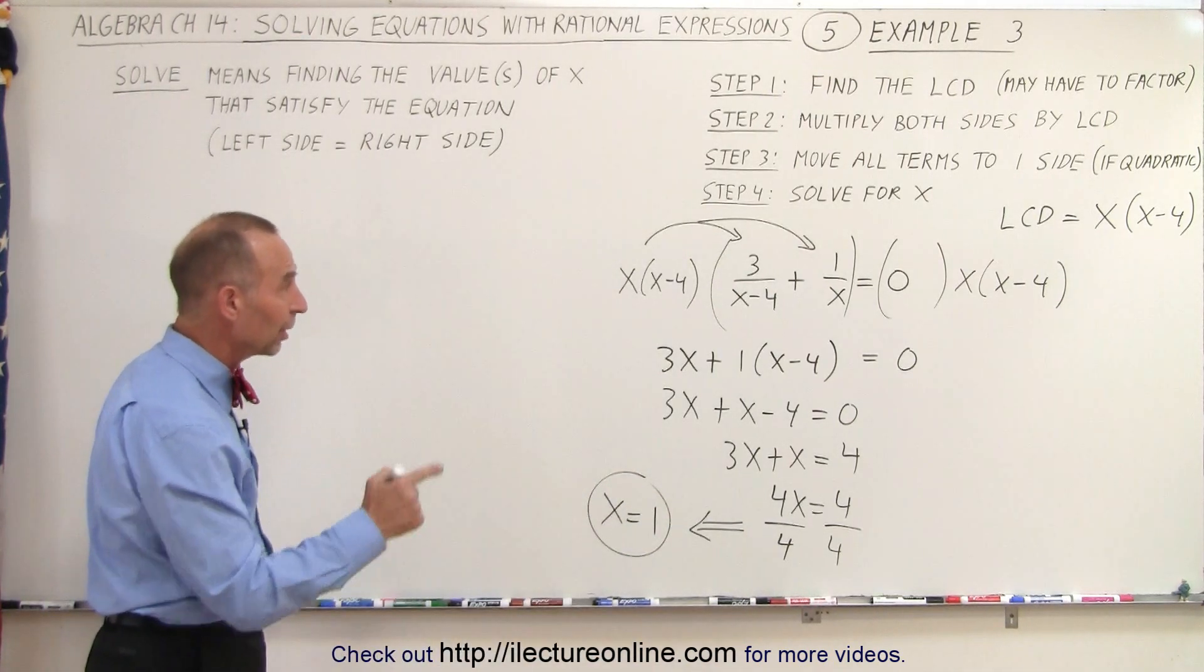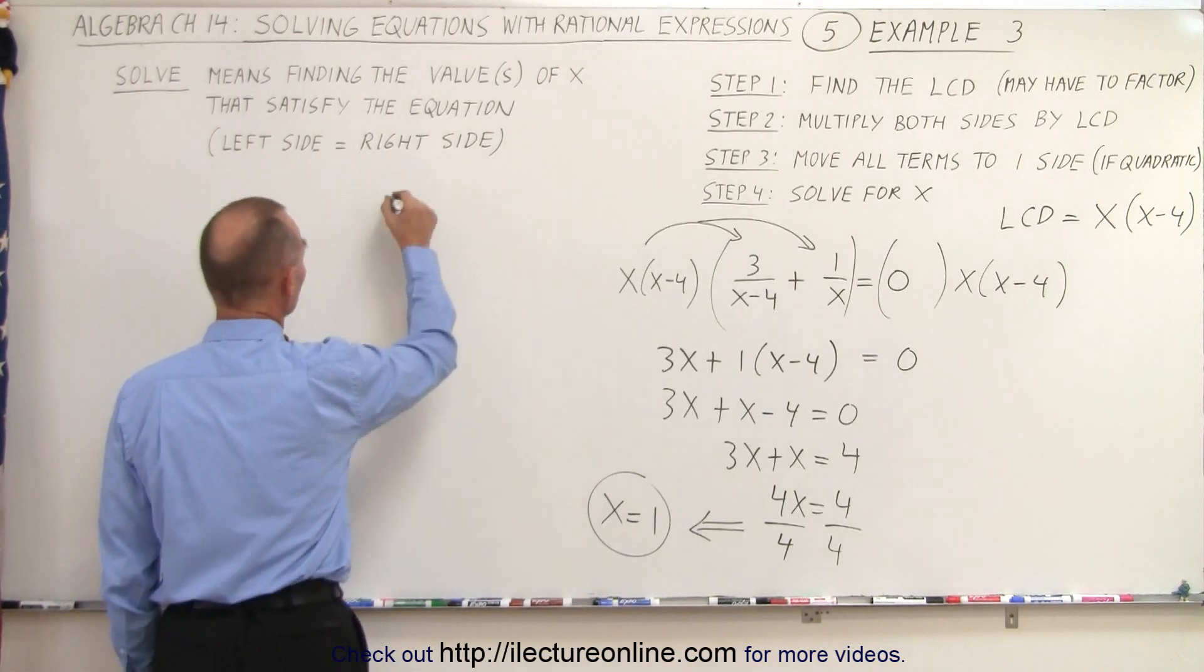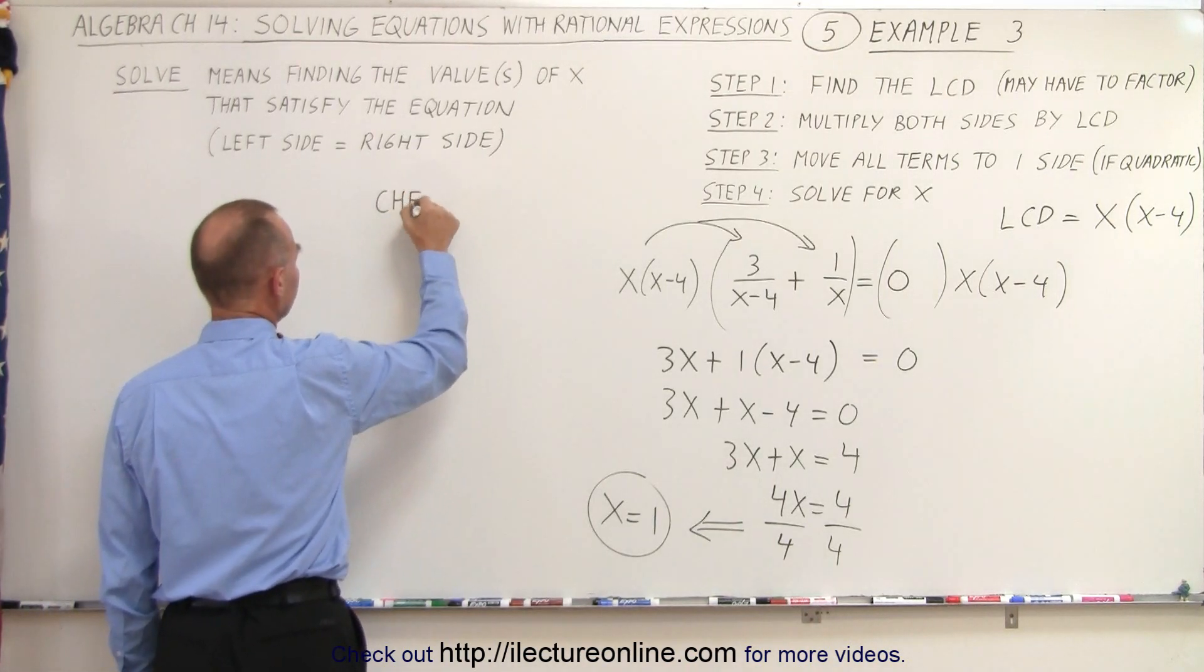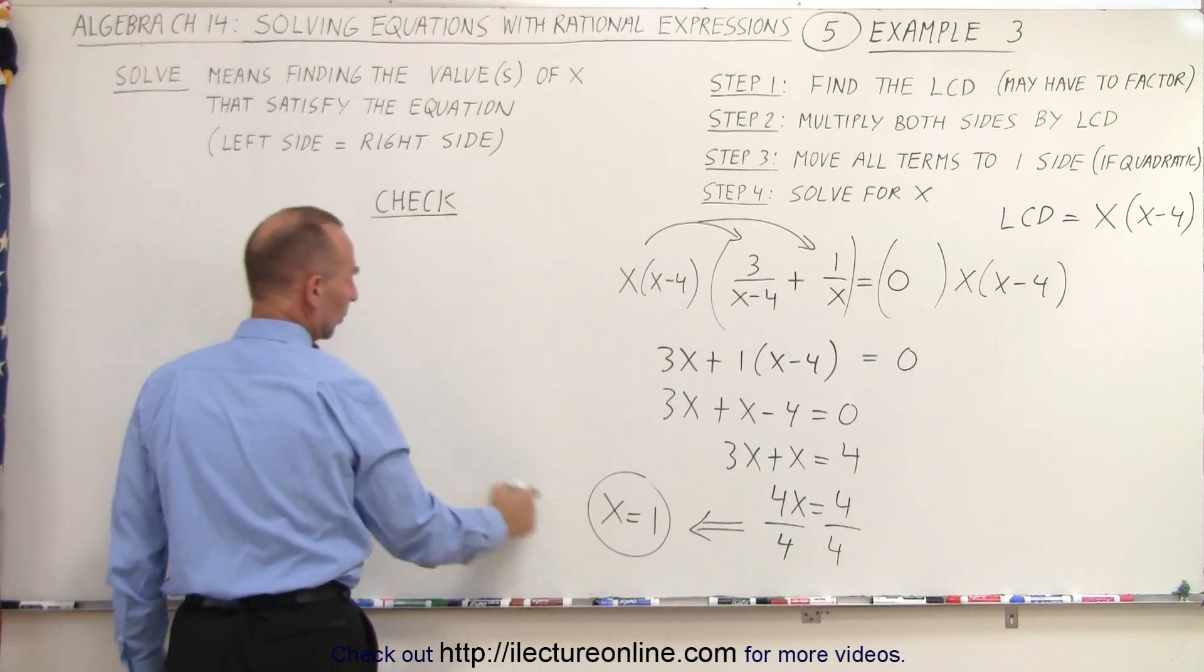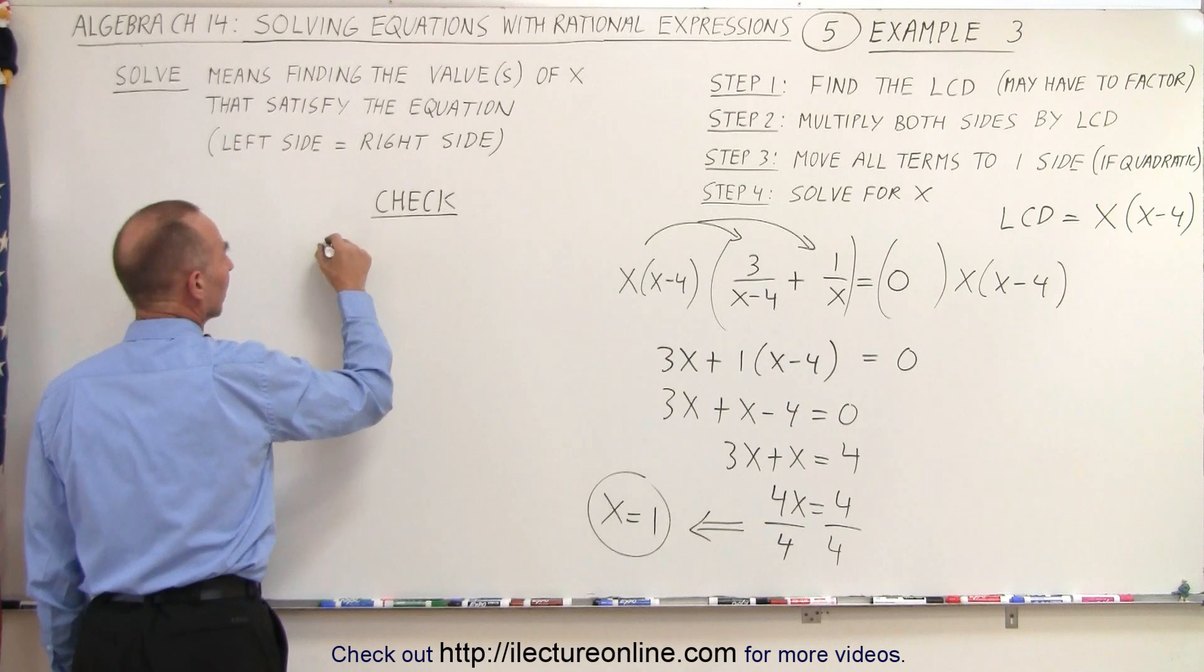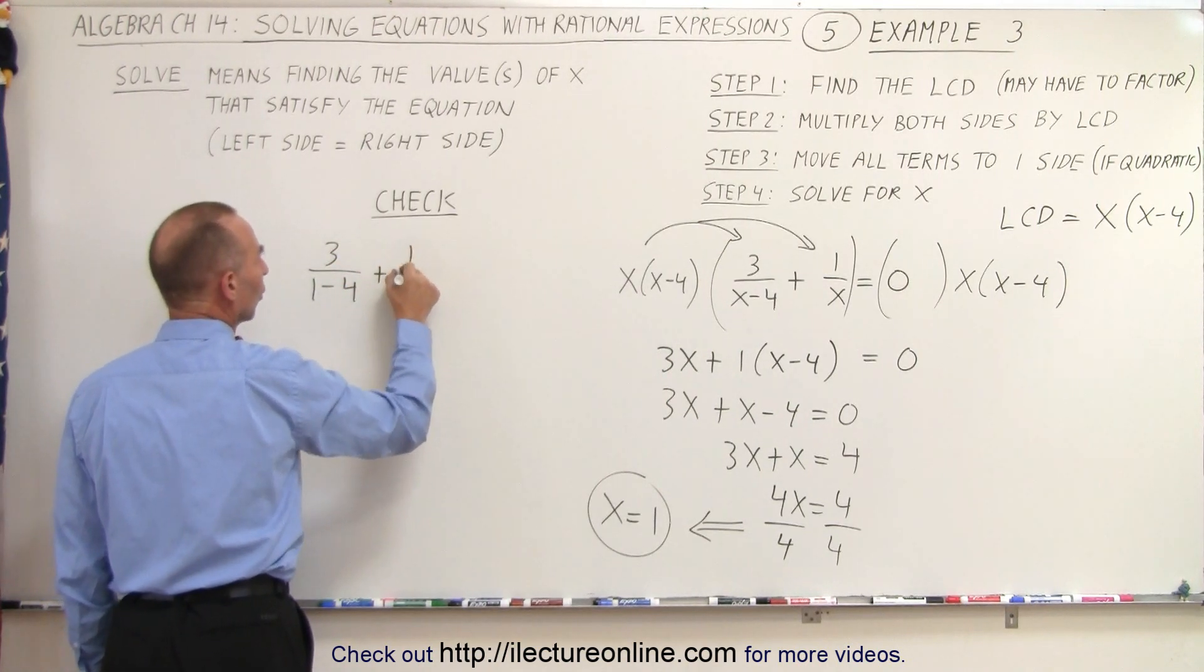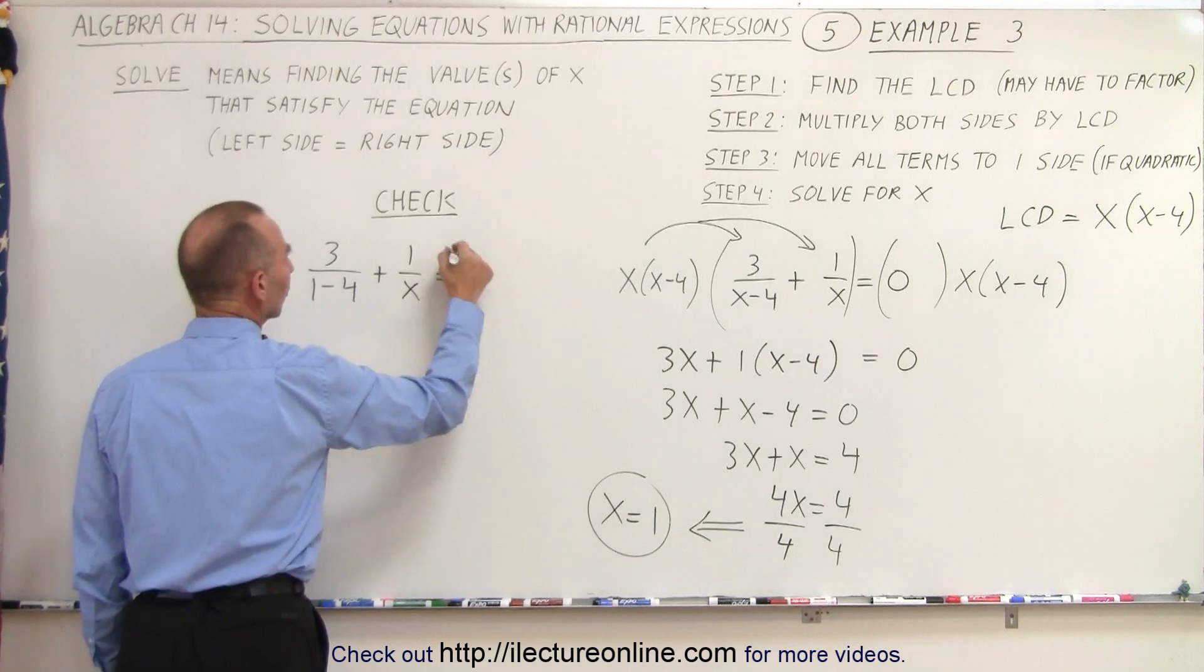Now just to make sure, let's go ahead and plug that back in the original equation to see if that's indeed the correct solution. So we're going to check. We're going to plug x equals 1, so substitute every x with a 1. 3 divided by 1 minus 4 plus 1 over 1 is equal to 0, question mark.